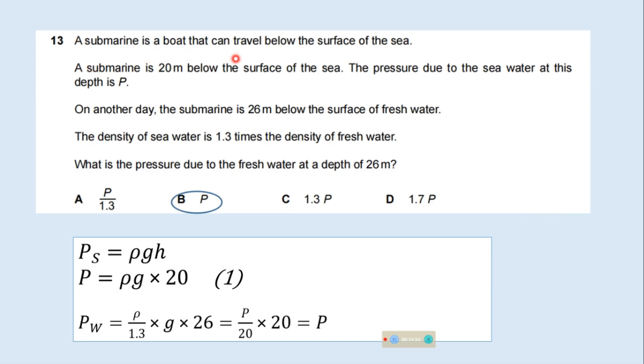A submarine is a boat that can travel below the surface of a sea. A submarine is 20 meters below the surface of the sea. The pressure due to the sea water at this depth is P. On another day the submarine is 26 meters below the surface of fresh water. The density of sea water is 1.3 times the density of fresh water. What is the pressure due to the fresh water at a depth of 26 meters? This is the pressure formula. Pressure equals rho g h at a depth h. Rho is the density, g is gravitational field strength, and h is the depth.